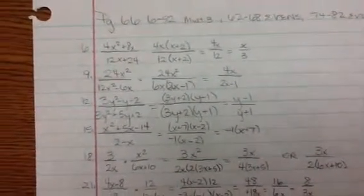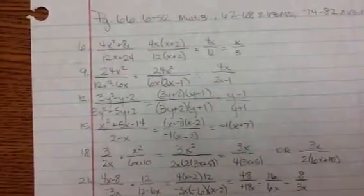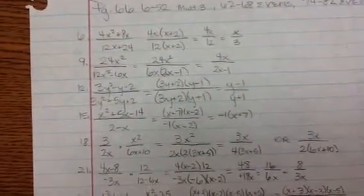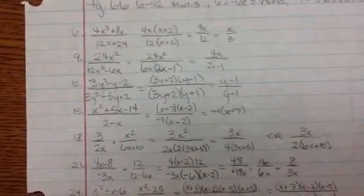Alright, the answer to number 6 is x over 3, and you can see how I factored it out there and crossed out common factors on top and bottom. Number 9 is 4x over 2x minus 1. Number 12 is y minus 1 over y plus 1.